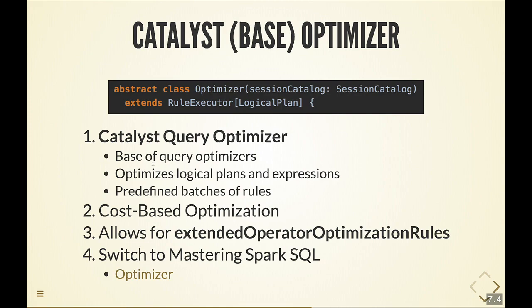This is where you can find cost-based optimization. It's disabled by default, so you need to enable it. I've used it twice in my projects and they were fine, but I ran into some issues with CBO because it's probably not widely used yet. I'm not sure about 2.4 whether it will be enabled or not. It's not bulletproofed yet, but you can still get better performance, especially with joins, if you enable cost-based optimization.